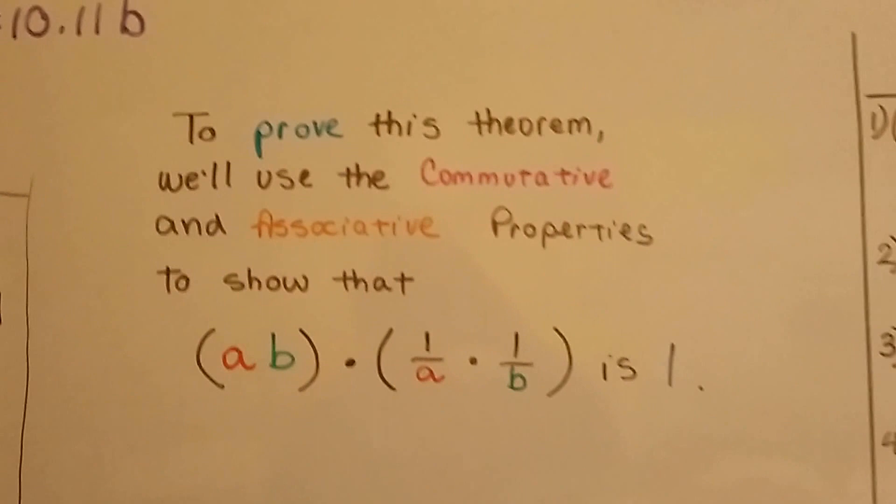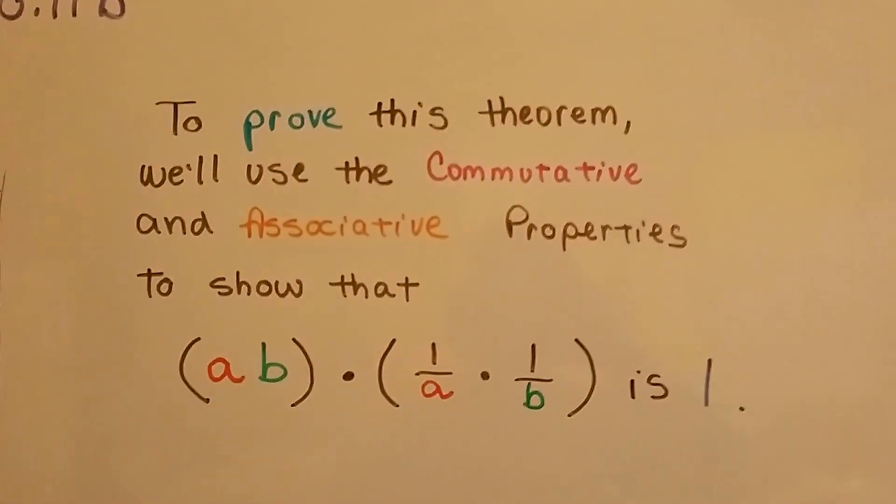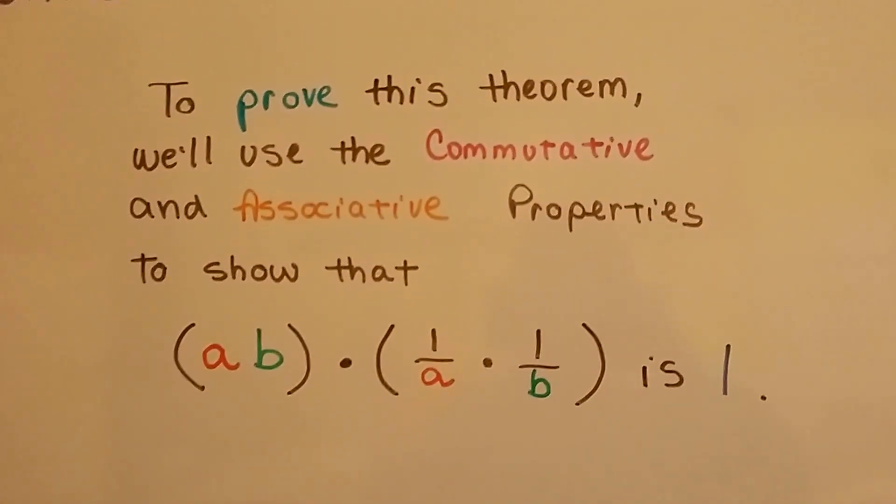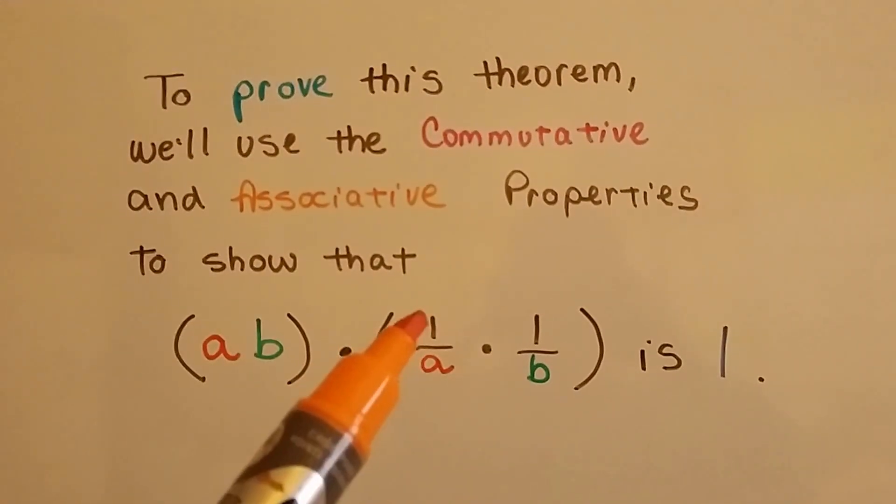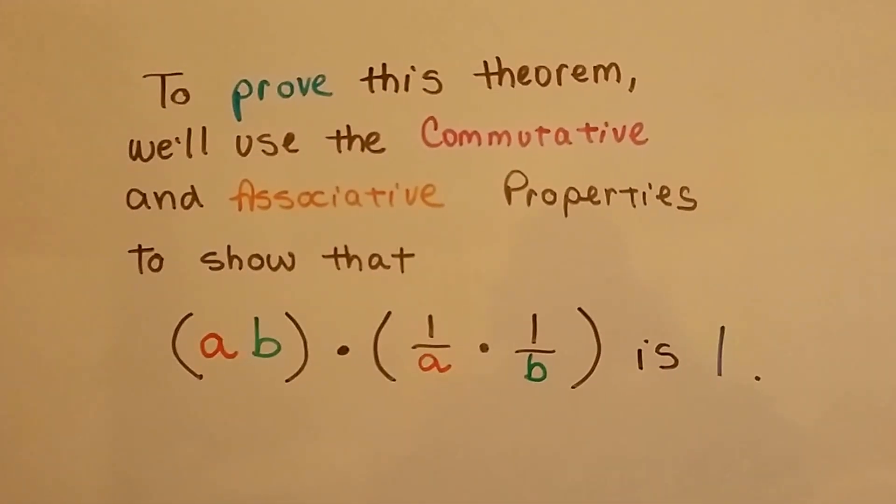To prove this theorem, we'll use the commutative and associative properties to show that a times b multiplied by 1 over a times 1 over b is going to be 1.